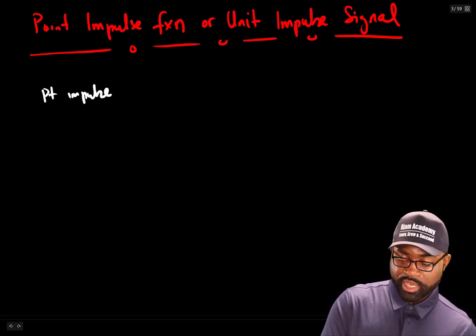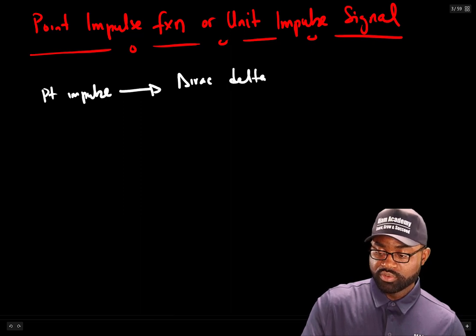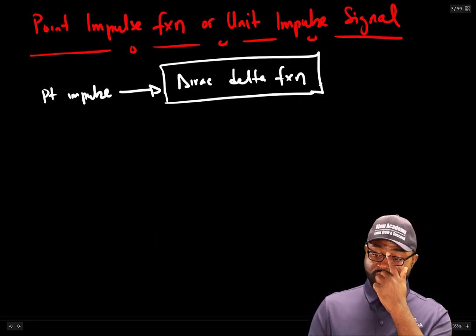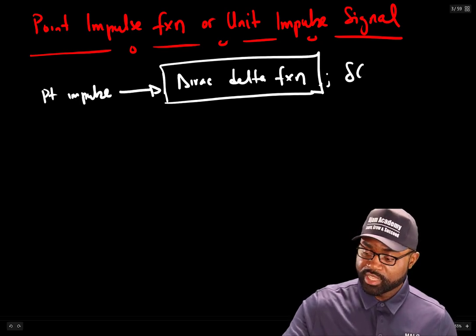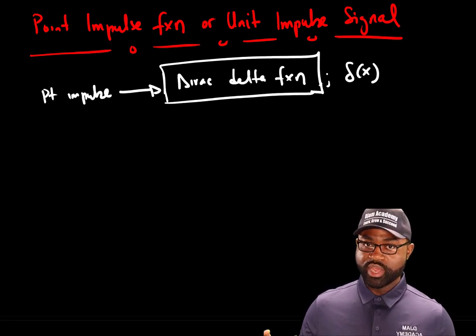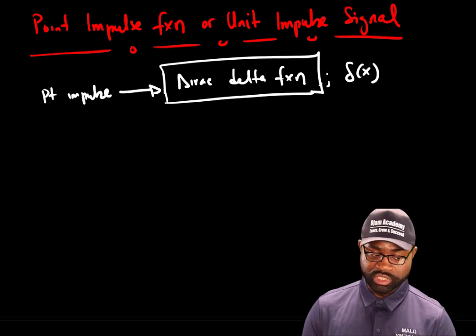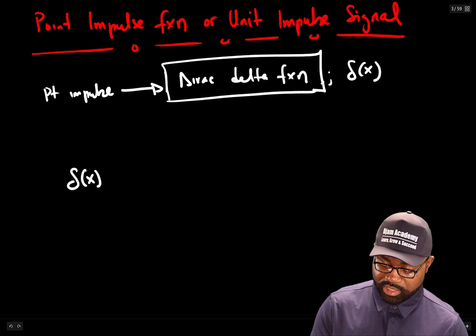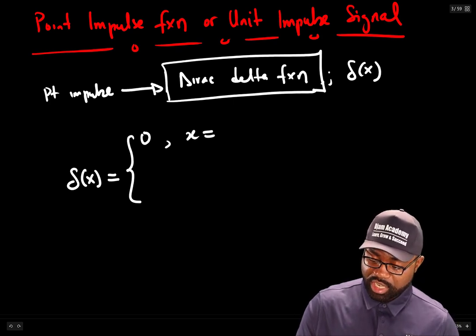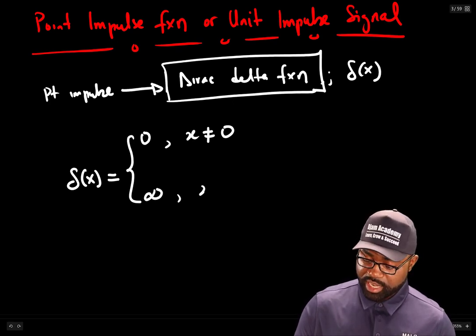A point impulse is represented by the Dirac Delta function. The Dirac Delta function is zero everywhere except at the origin. In other words, Delta(x) is zero everywhere as long as x is not equal to zero, but is infinitely large at x equal to zero.